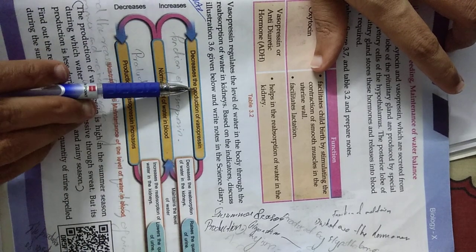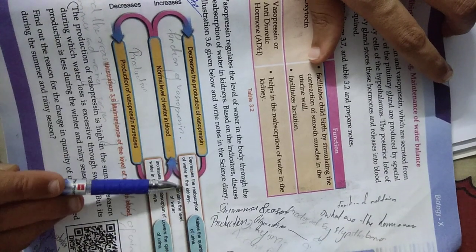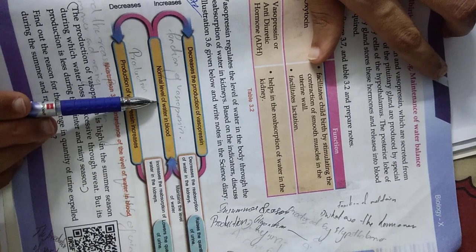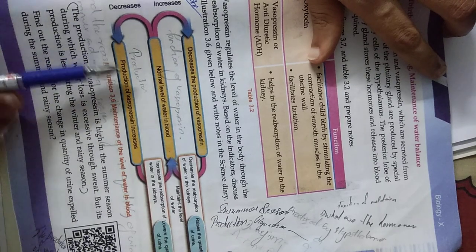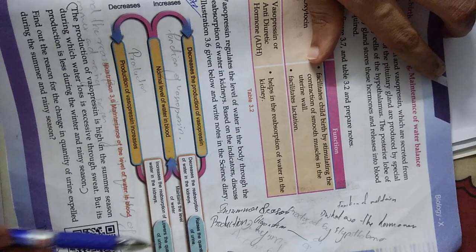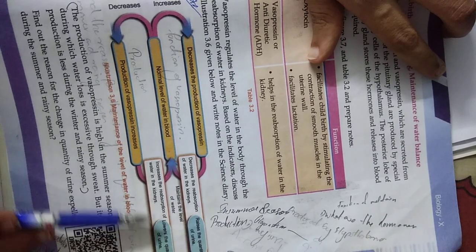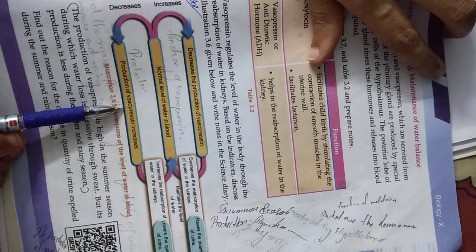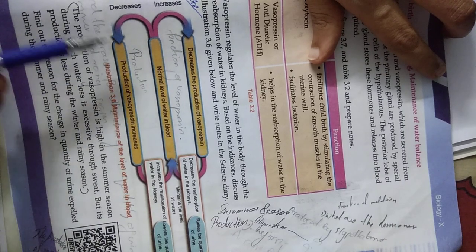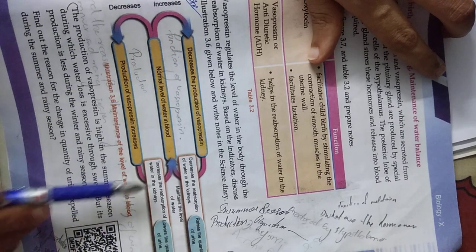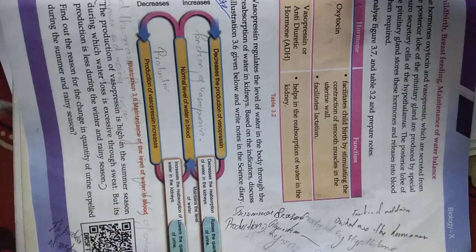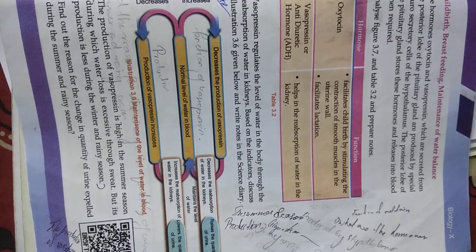So vasopressin can be reabsorbed, maintaining normal water level in the body. In summertime, when you sweat, the body loses water. Vasopressin helps reabsorb water to maintain normal water level.